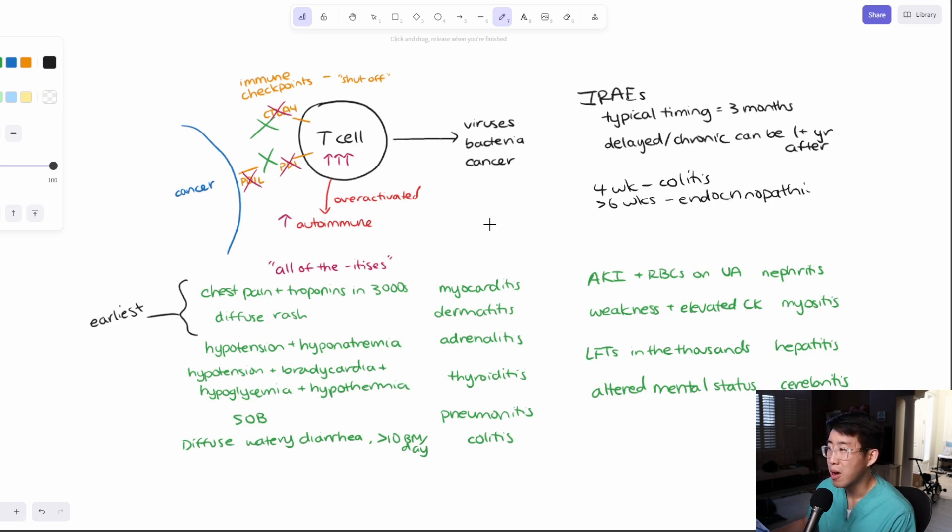You often see multiple endocrine systems impacted and you can even get panhypophysitis. So basically your entire pituitary system is affected and it tends to be permanent damage to the endocrine system. And so these patients will have to be on replacement, hormone replacement with steroids, thyroid replacement, basically lifelong after receiving or having this side effect.